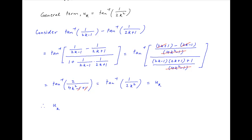Therefore, the general term uk can be written as tan inverse 1 upon 2k minus 1 minus tan inverse 1 upon 2k plus 1.